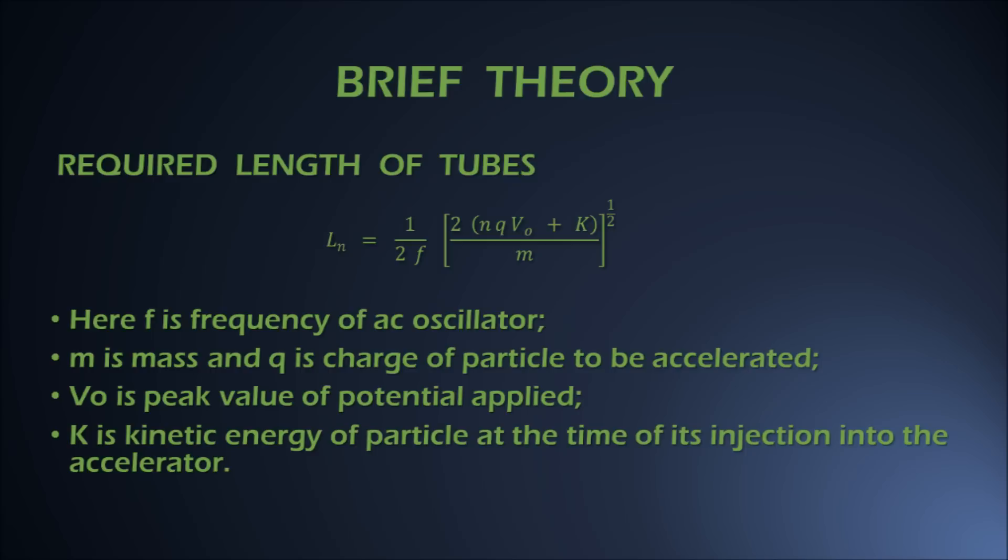The length of tubes is not randomly chosen. There is a particular relation for length of any nth tube. Using this formula, the length of first, second, third tube is decided. By putting value of n, you can calculate the required length of any nth tube.